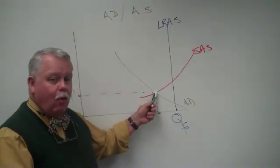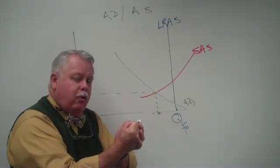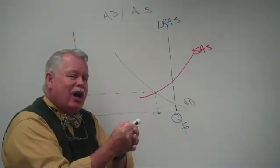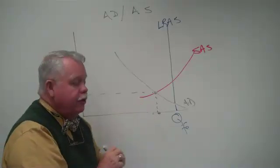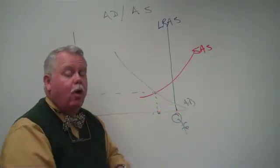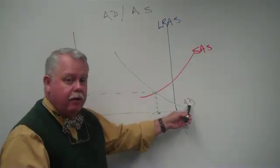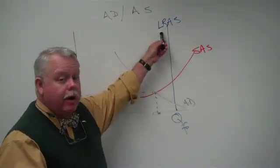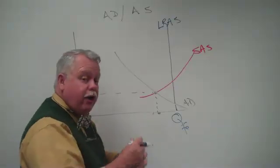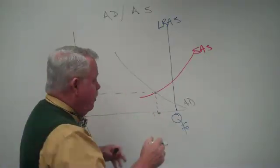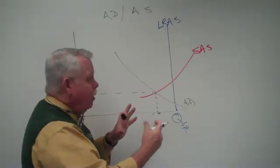At this point, it's a short-run equilibrium, but it's got pressure on it to change, to move towards the long-run equilibrium. Where's the long-run equilibrium? Aggregate demand and long-run aggregate supply. So we say that, absent any fiscal monetary policies, et cetera, ceteris paribus, if you will.